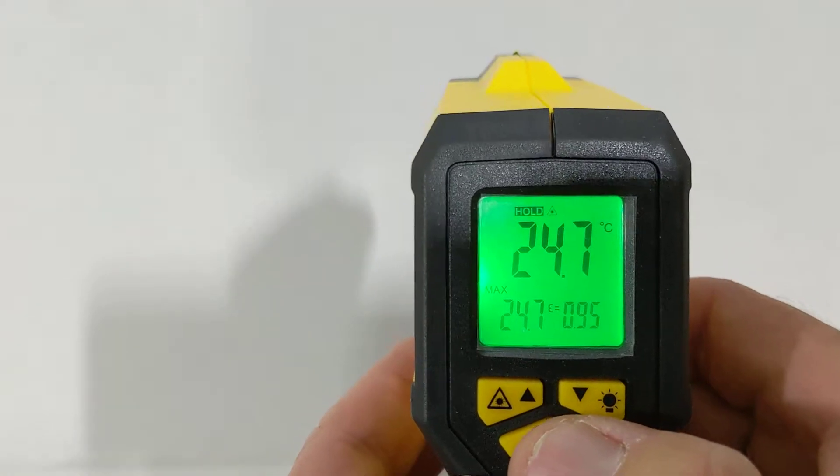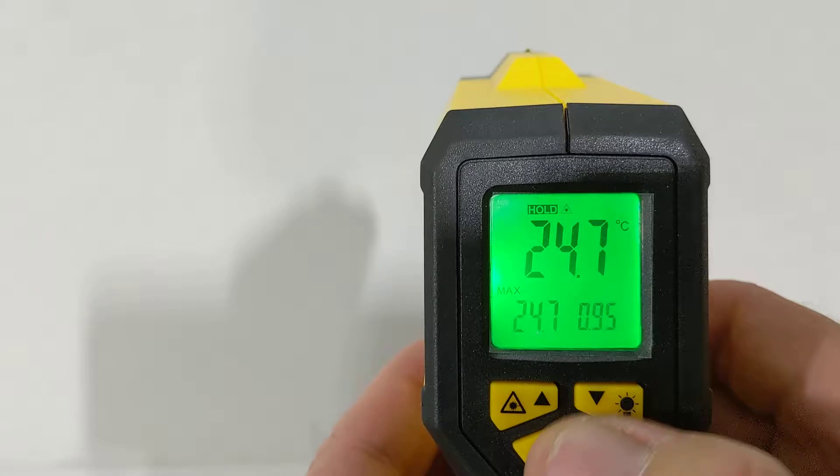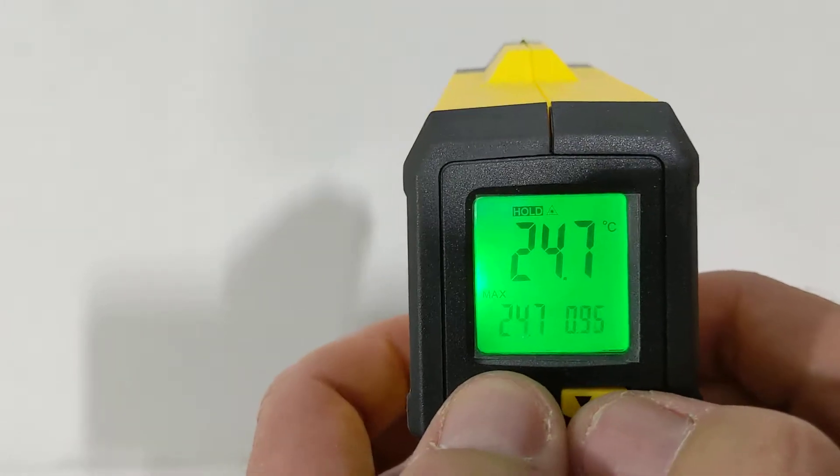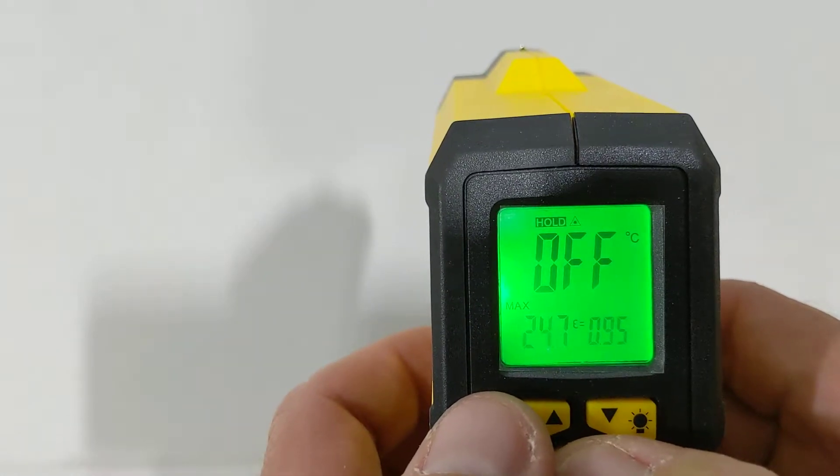Then we've got a mode button here. So if we press on mode, you'll see the emission is flashing. See, I can change the emission up and down here. 95 is usually the go for most things.